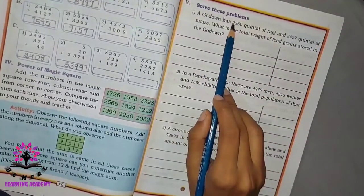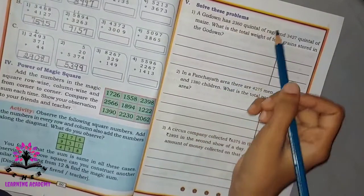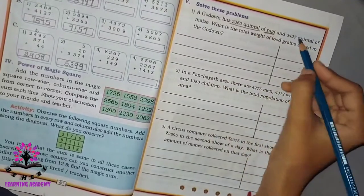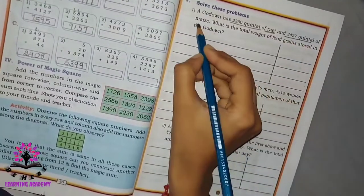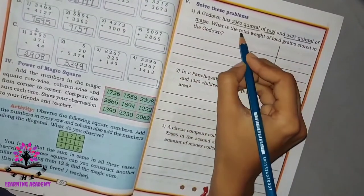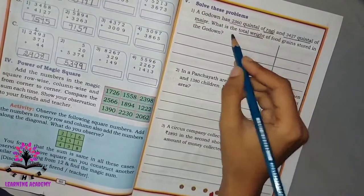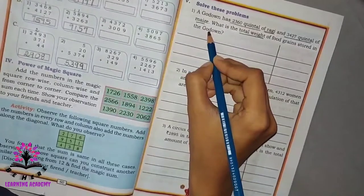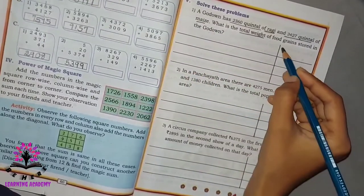Here they have given 2360 quintal of ragi and 3427 quintal of maize present in a godown. You have to find the total. Whenever there is a word called total, what you have to do is find the sum.